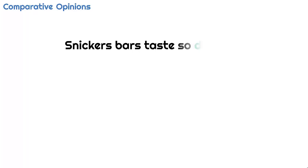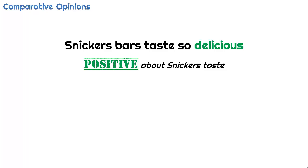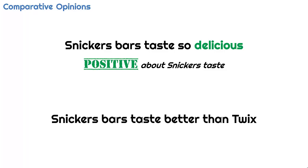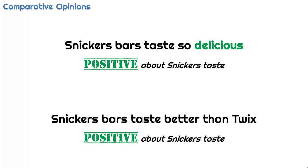A regular opinion expresses sentiment about a particular entity or aspect of the entity. 'Snickers bars taste so delicious' expresses a positive sentiment on the aspect of taste of a Snickers candy bar. A comparative opinion uses multiple entities and bases the comparison on a shared aspect. 'Snickers bars taste better than Twix' compares Snickers and Twix based on their taste, which is the aspect, and expresses a preference for Snickers.